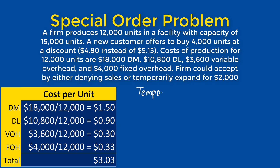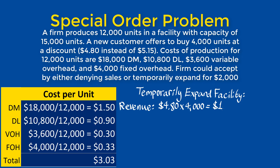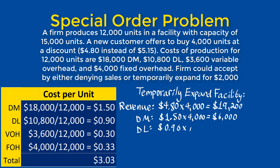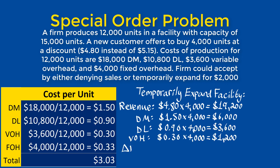Instead of denying the sale of 1,000 units to existing customers, the firm can choose to temporarily expand its facility, giving a total revenue of $19,200, direct material cost of $6,000, direct labor costs of $3,600, and variable overhead costs of $1,200. With the additional cost of temporarily expanding being $2,000, the total profit is $6,400, making this the superior option.